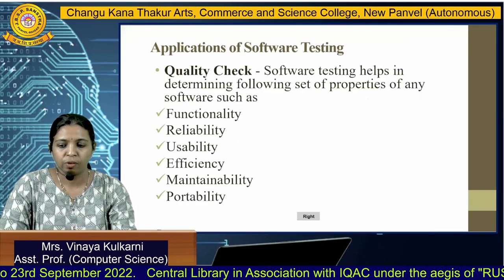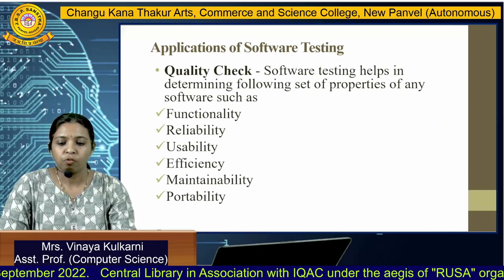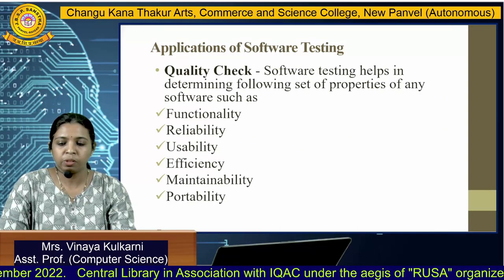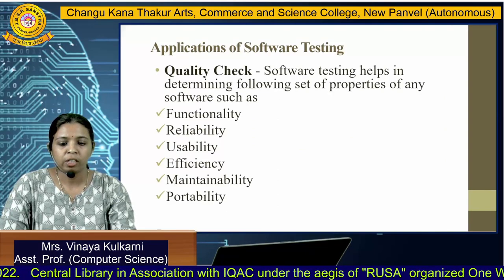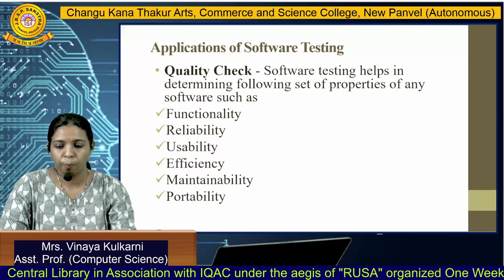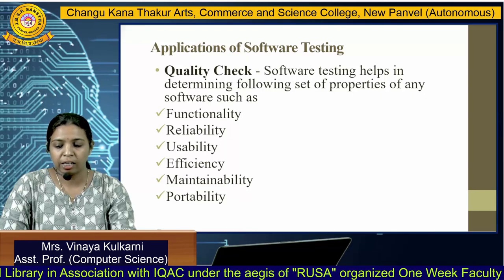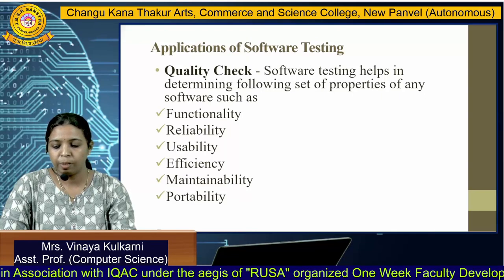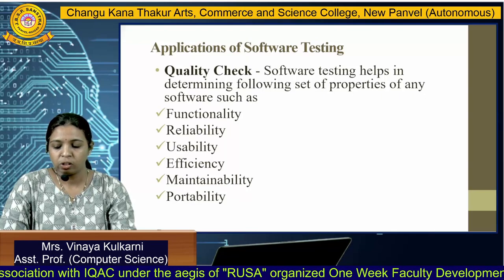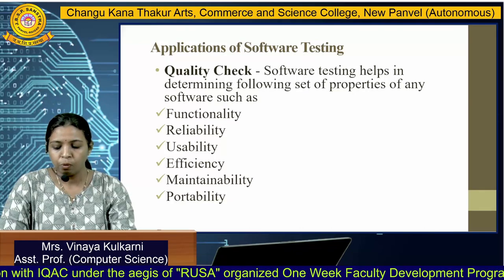The second application is quality check. Software testing helps in determining the following set of properties such as functionality, reliability, usability, efficiency, maintainability, and portability.